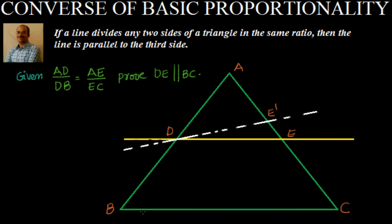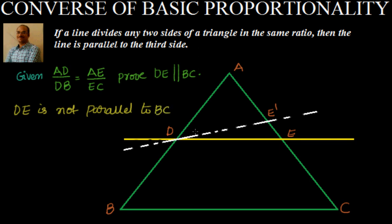We have to prove that DE is parallel to BC. Let us start with DE is not parallel to BC. So, if DE is not parallel to BC, there should be a line DE' which is parallel to BC.